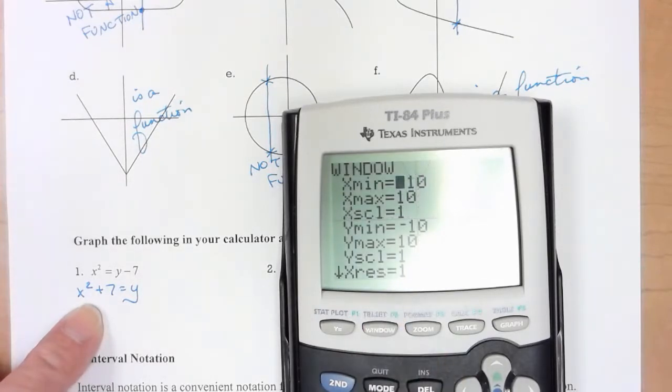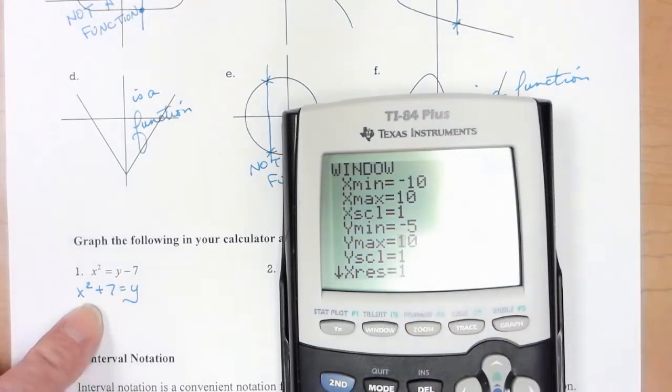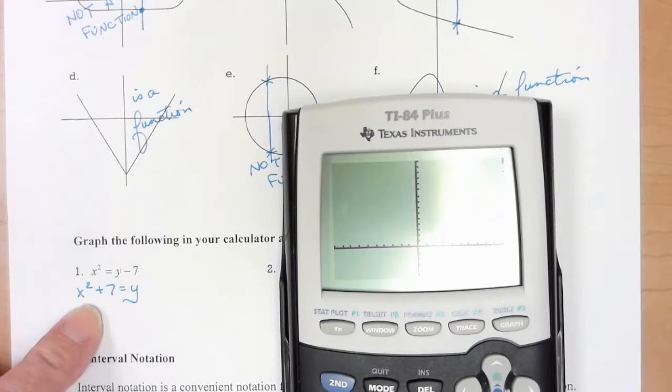I'm going to change my window a little bit so I can see a little bit more. So I'm going to make that a negative 5. Because my graph was way up here. I need to get larger y values down here. So let me put 15 there. That's called a parabola. That is a function.